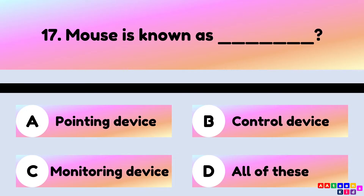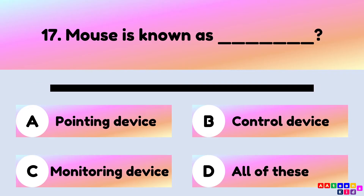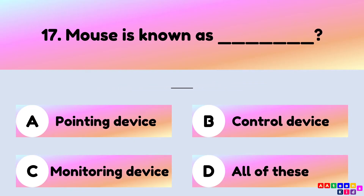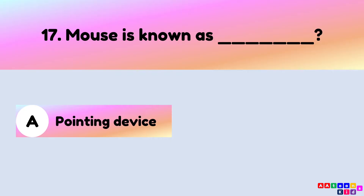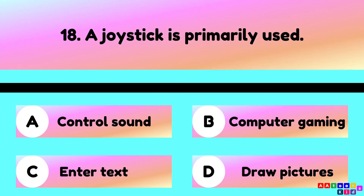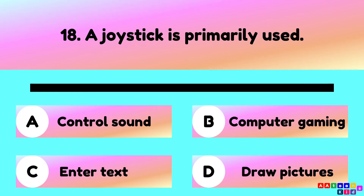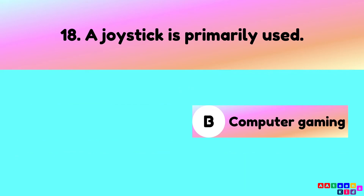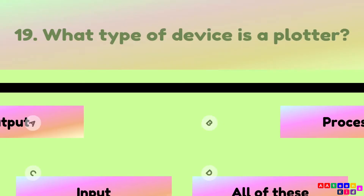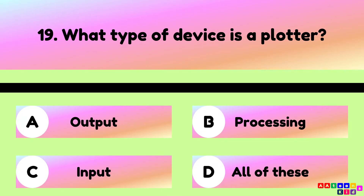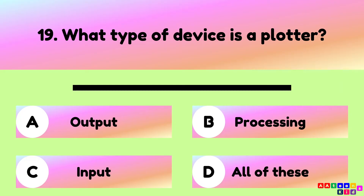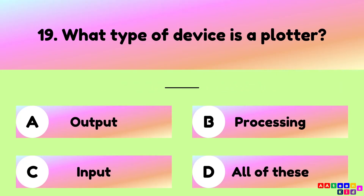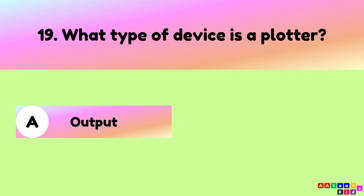A mouse is also known as a pointing device. A joystick is primarily used in computer gaming. What type of device is a plotter? A plotter is an output device.